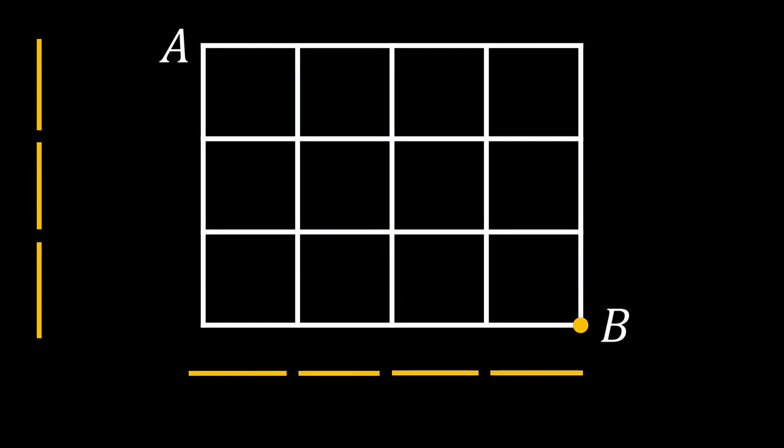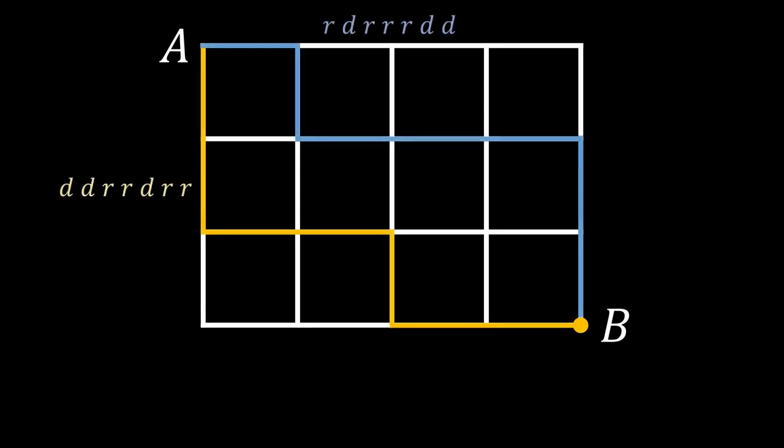What makes one path different to another is where the right and down steps occur. For example, if we call a right step R and a down step D, then the blue path would represent R, D, R, R, D, D, and the yellow path D, D, R, R, D, R, R. If we were to randomly generate another path, it would also have another set of R's and D's that is different.